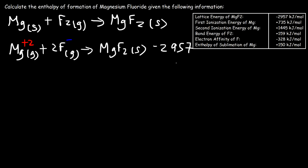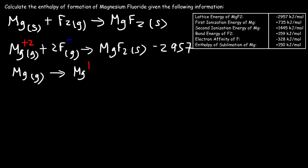Now we need to write a reaction that corresponds to the first ionization energy of Mg. The ionization energy is the energy required to remove an electron from a gaseous atom. So we start with gaseous magnesium and remove one electron, producing Mg⁺ in the gaseous state. The energy change for that is +735 kJ/mol.